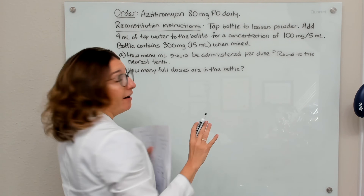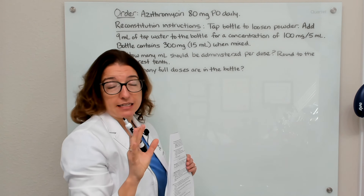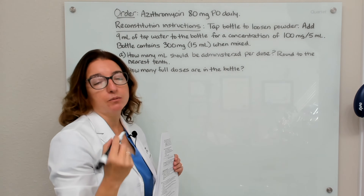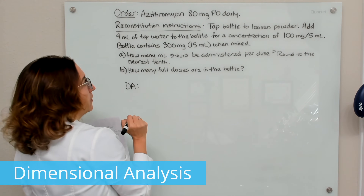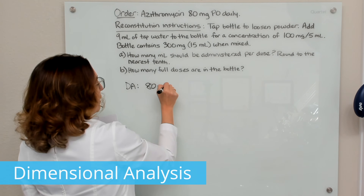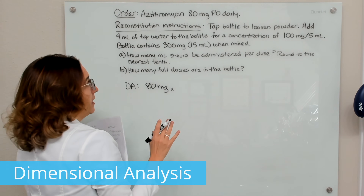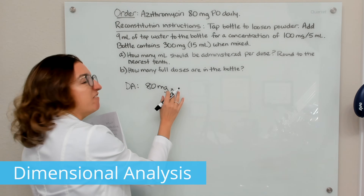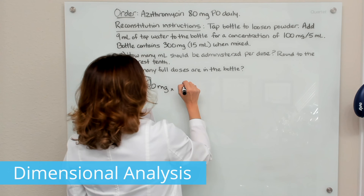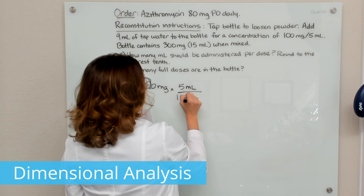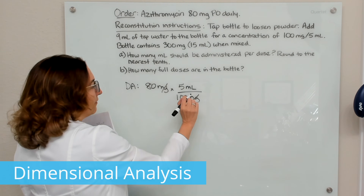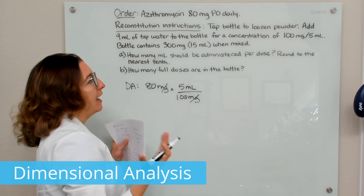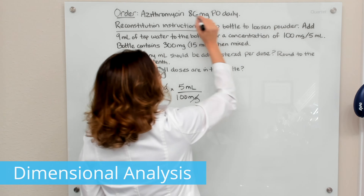We are only going to pay attention to the numbers we need to solve the question being asked. We don't care how many milliliters of tap water were added to the bottle — all we care about is the final concentration. Using dimensional analysis first, we write down what's ordered: 80 milligrams. Our units of measure are the same between what's ordered and the available concentration — both are milligrams, so no converting needed. We multiply by the available concentration, putting 5 mL on top and 100 milligrams on the bottom, so milligrams cross off and we're left with milliliters. We multiply that out and end up with 4 mL.